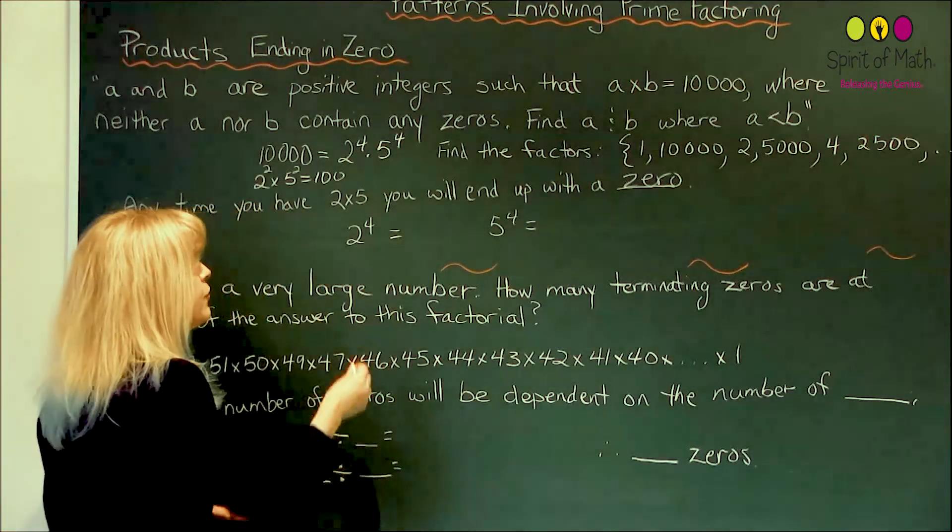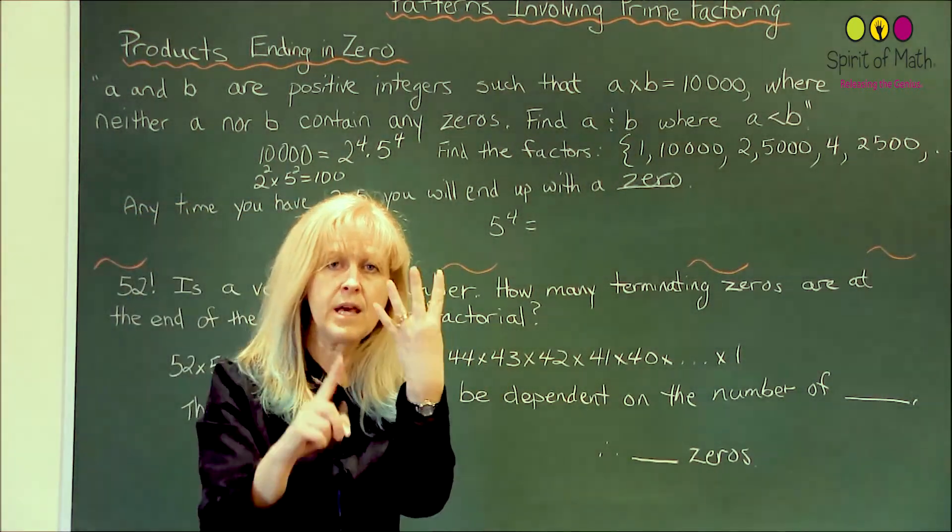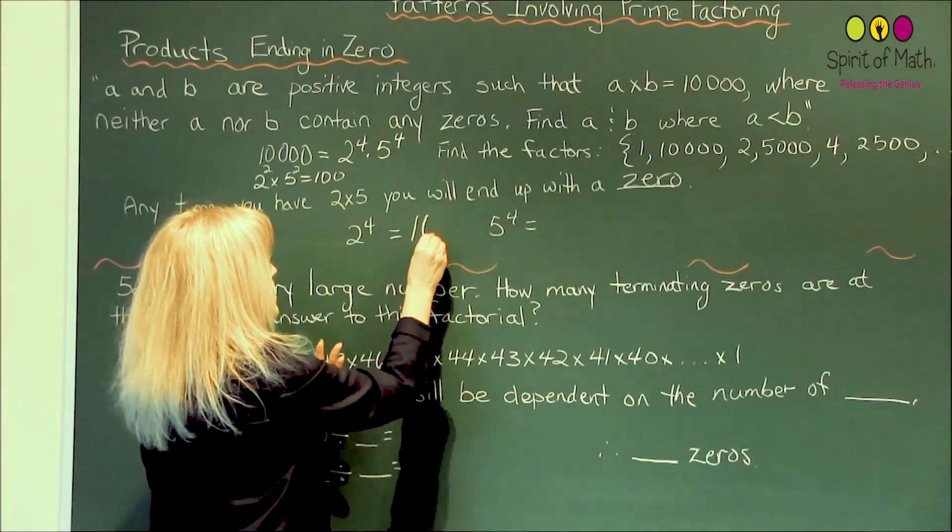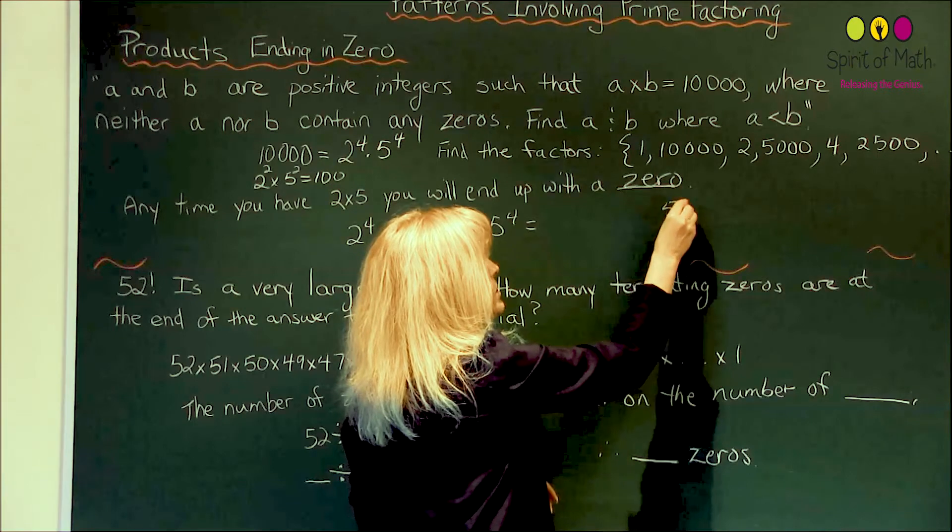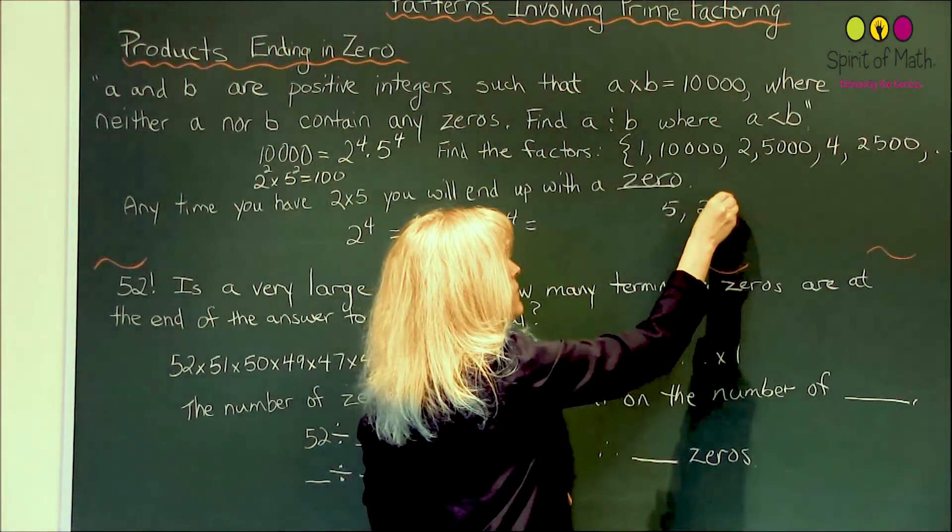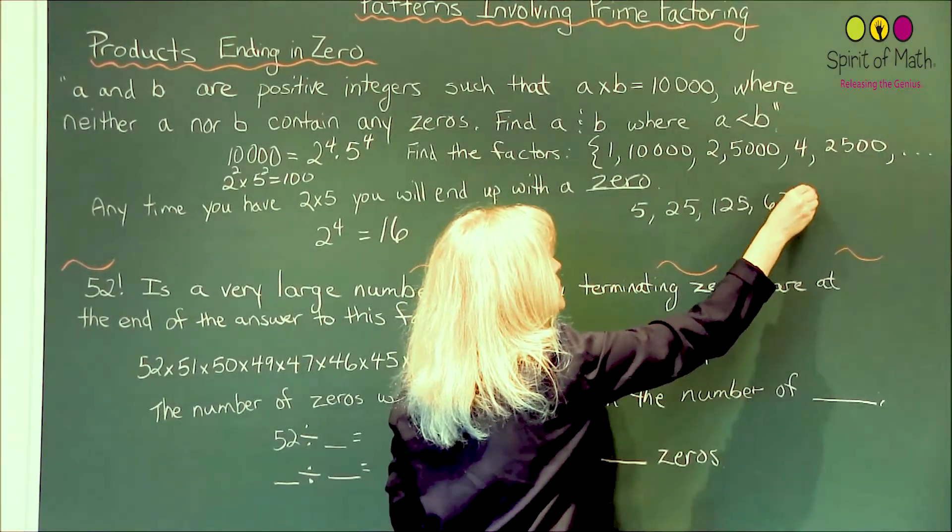So 2 to the 4th, well, you've got 2, 4, 8, 16. That's 2 to the 4th, because you multiply by 2 each time. 5 to the 4th, the powers of 5 are 5, 25, 125, and 625.